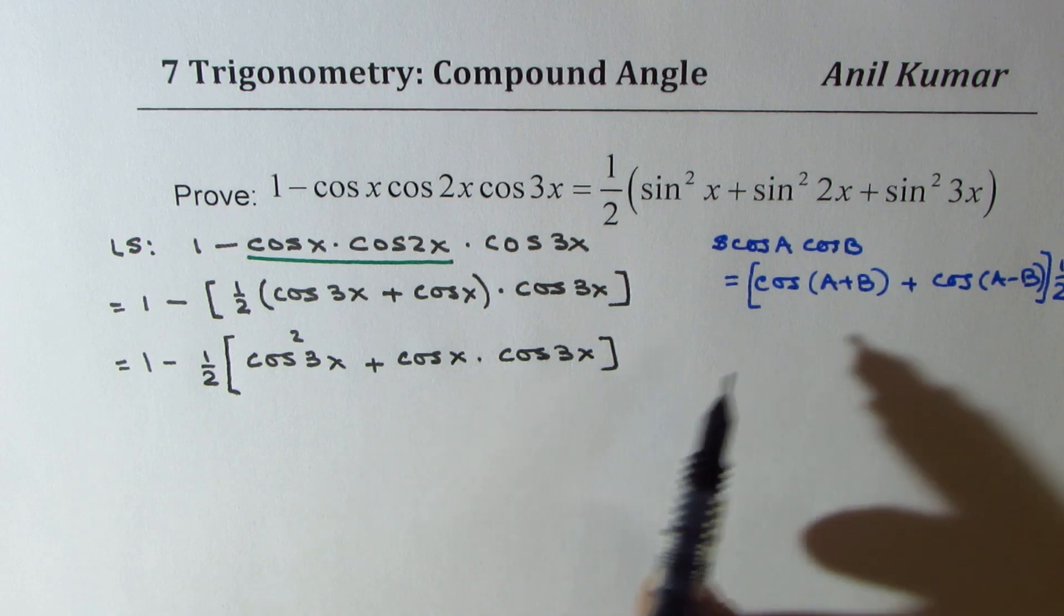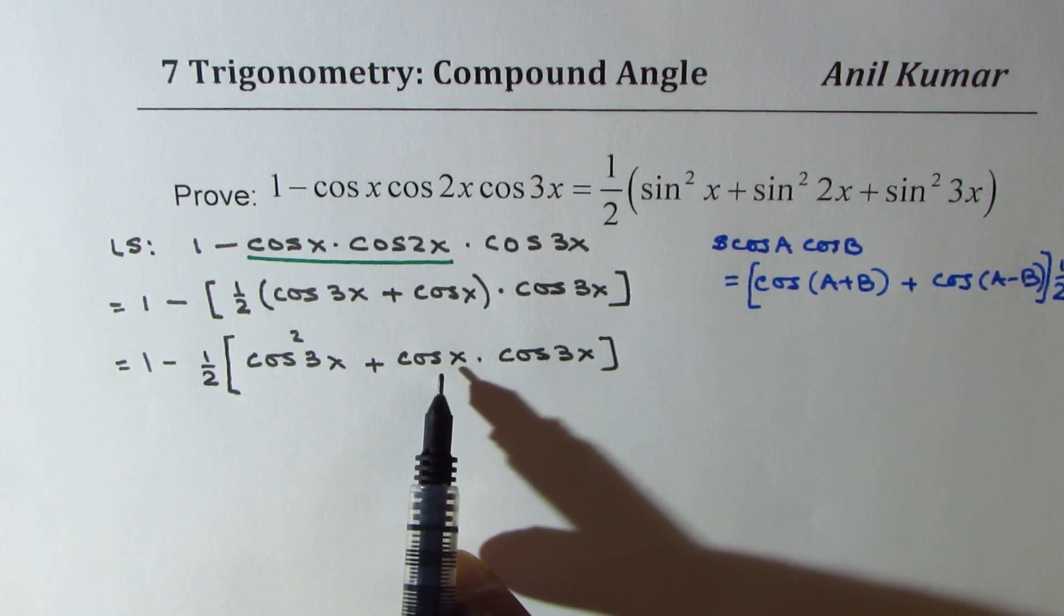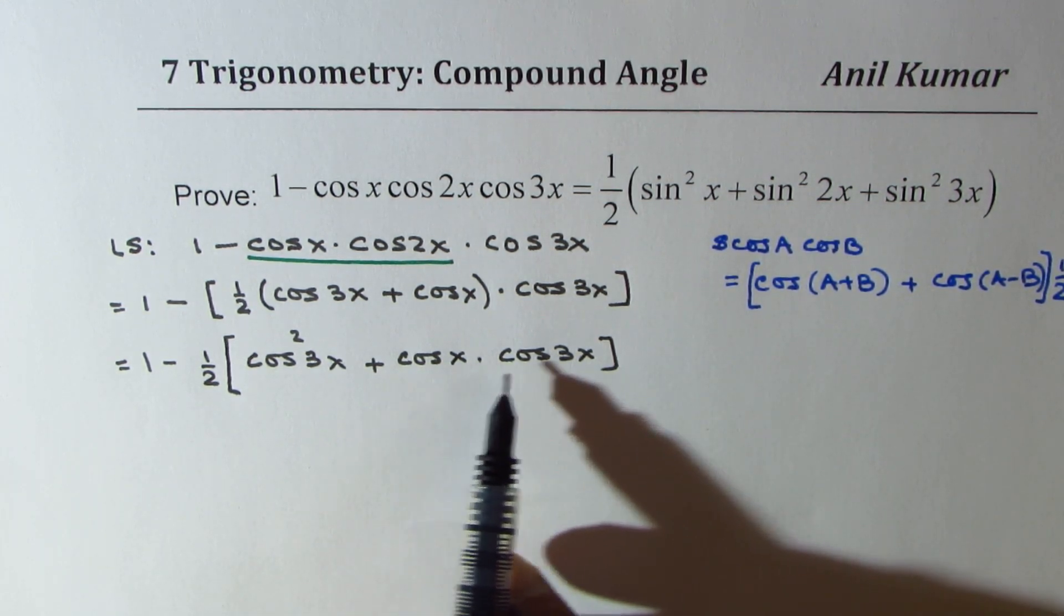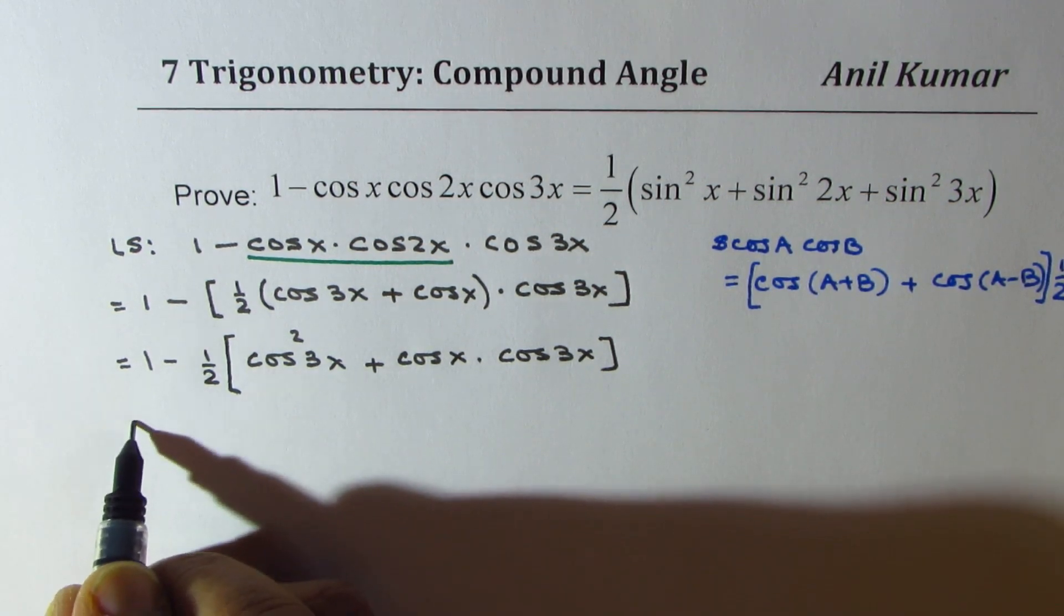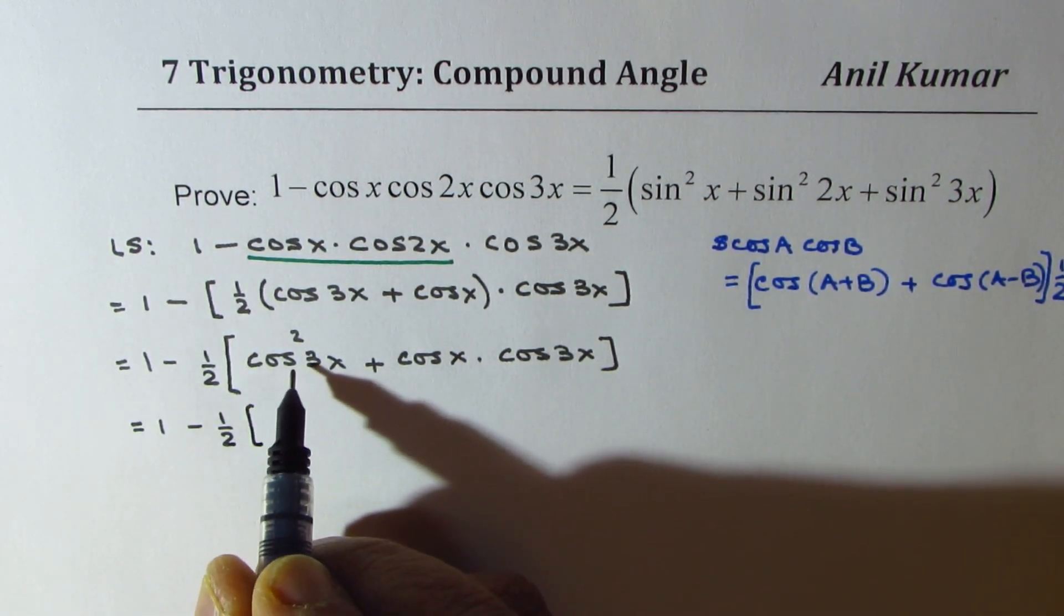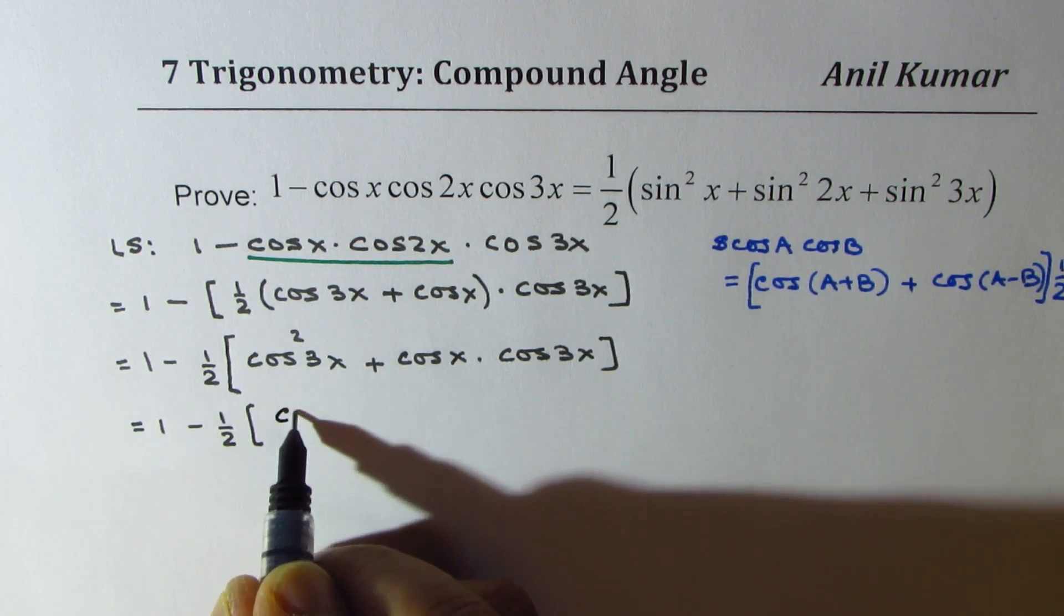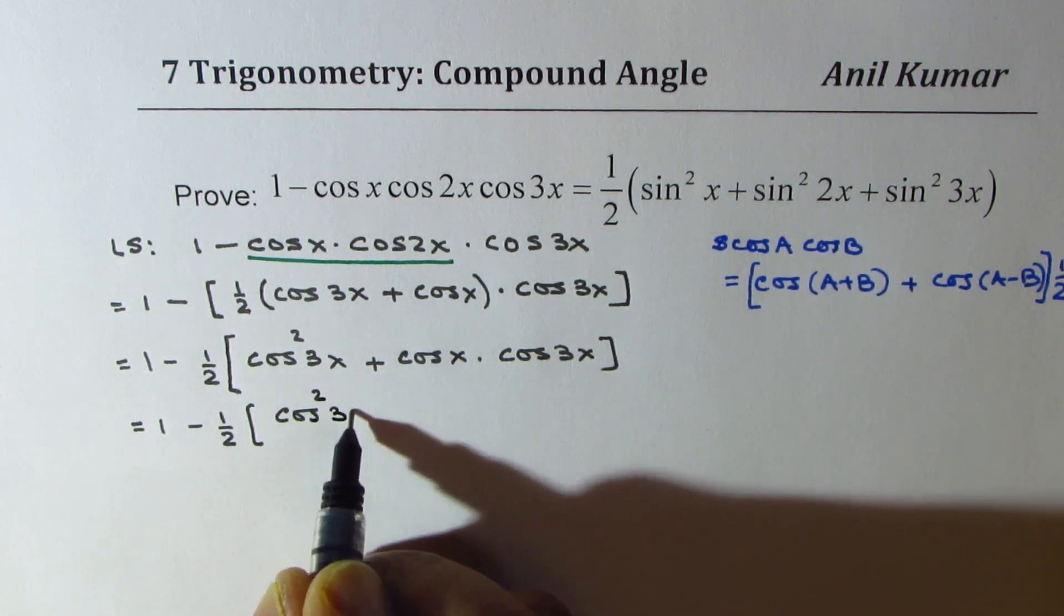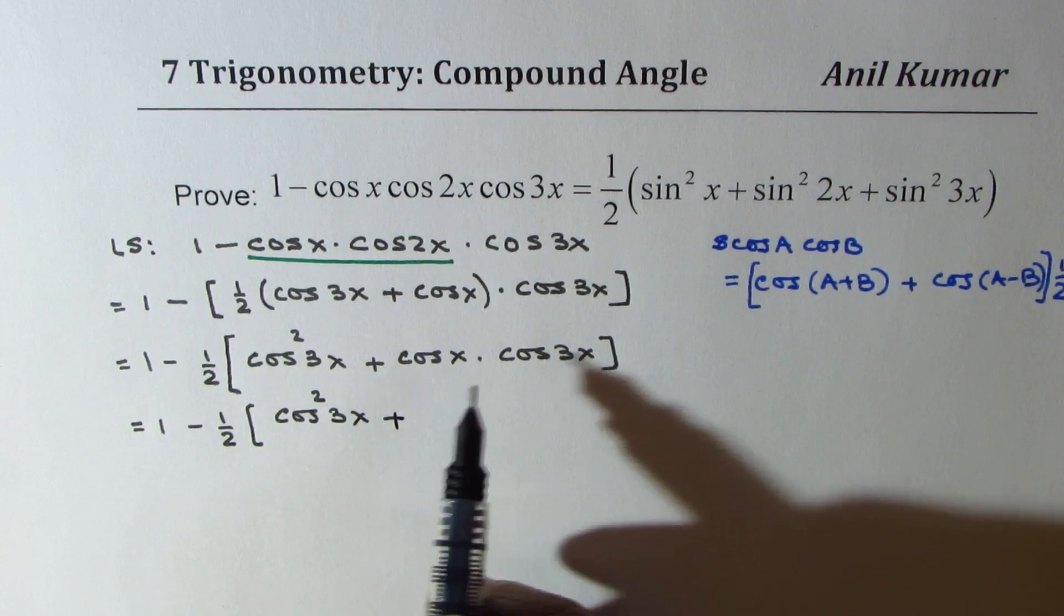Now, again, let's apply this formula for the product of cos x and cos 3x. We get 1 minus half of cos square 3x plus. Now, you again get half of sum of these two.